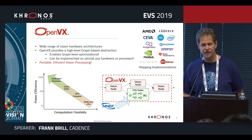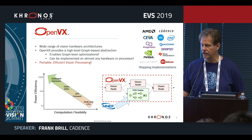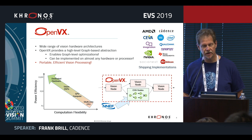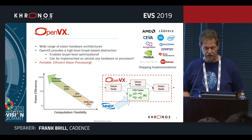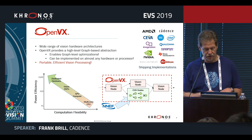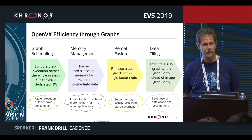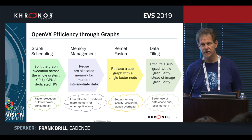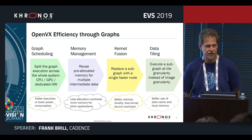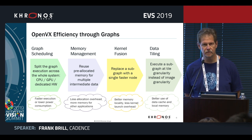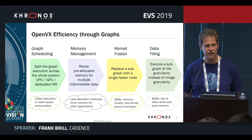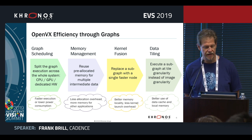That graph provides the OpenVX implementation an opportunity to do a compile or optimization step that accounts not just for individual kernels but for the data movement between kernels. For example, if you have an SoC with multiple processing units, the computation can be distributed across them automatically because the OpenVX implementation knows what compute resources are available, their performance characteristics, and what they're good or not good at.